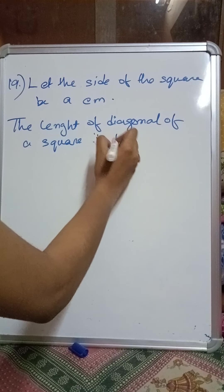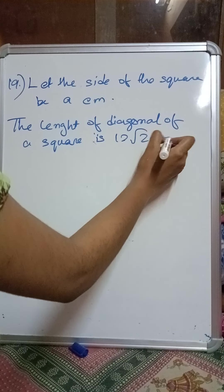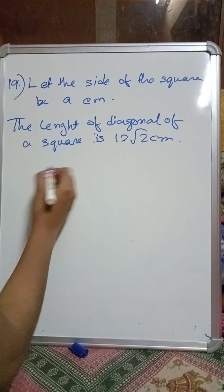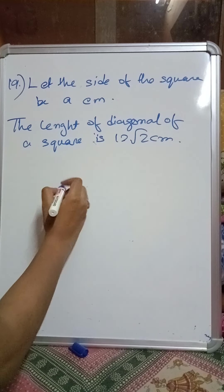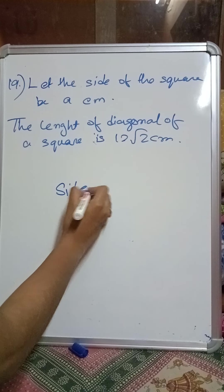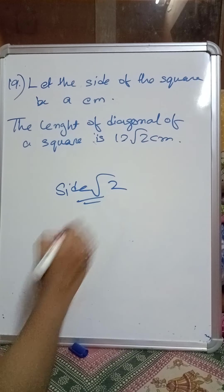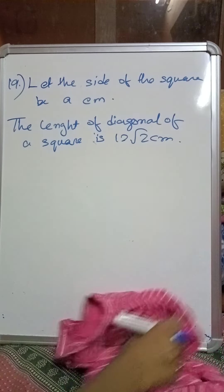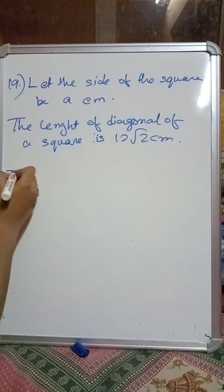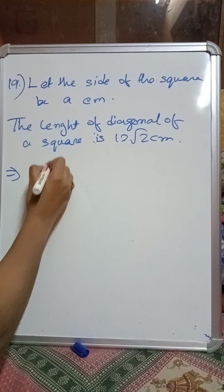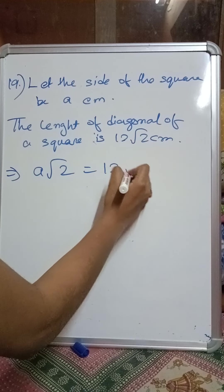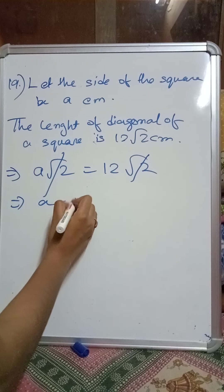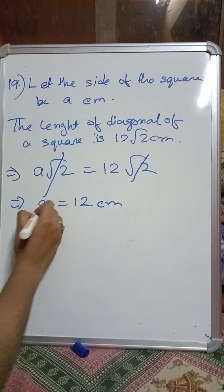Now, how do we calculate the diagonal of a square? The formula is: diagonal = side × root 2. The side we have considered is 'a', so we can write a root 2 = 12 root 2. The root 2 on both sides will cancel, so we get a = 12 centimeters.